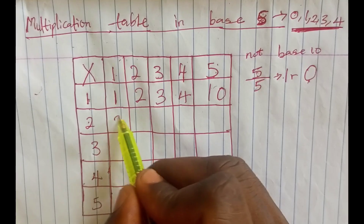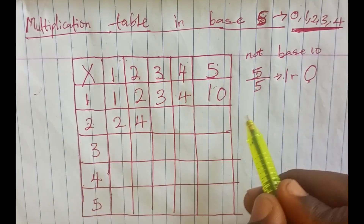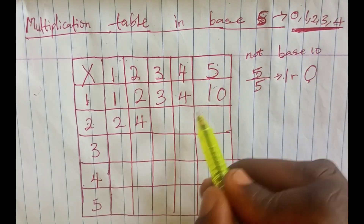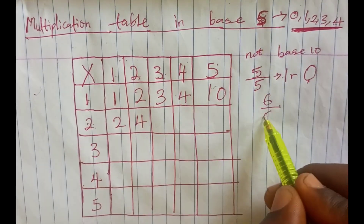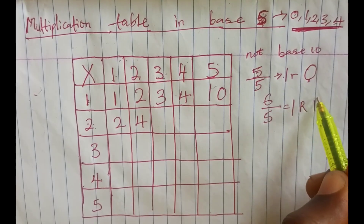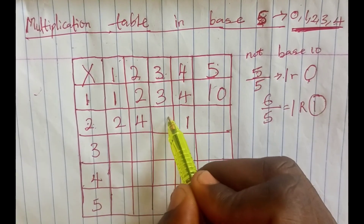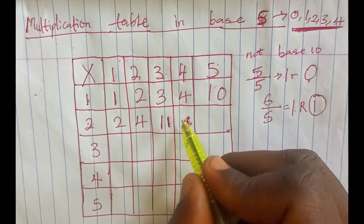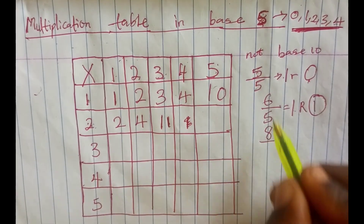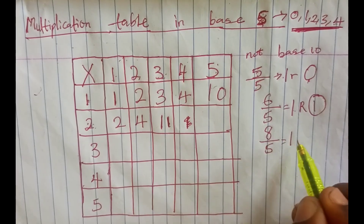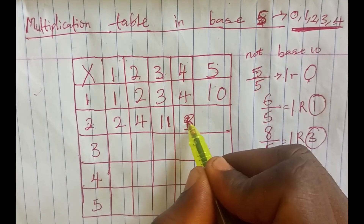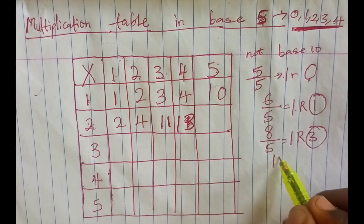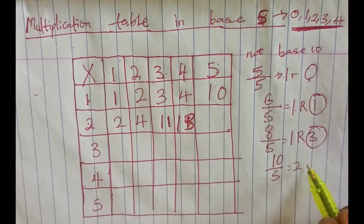For the 2 times table: 2 times 1 is 2, 2 times 2 is 4. For 2 times 3, we get 6 — we can't write 6 in base 5, so we divide 6 by 5, giving 1 remainder 1. Write the remainder 1 and carry the 1. For 2 times 4, we get 8; 8 divided by 5 gives 1 remainder 3. For 2 times 5, we get 10; 10 divided by 5 gives 2 remainder 0.